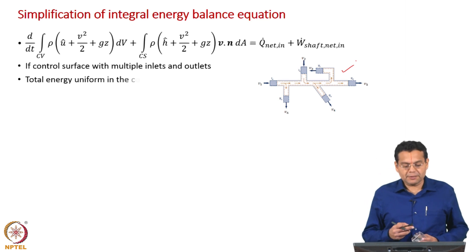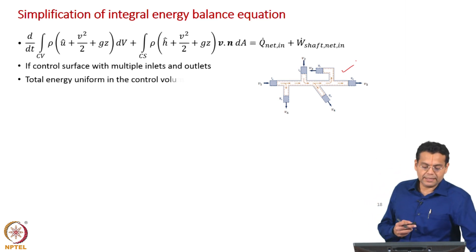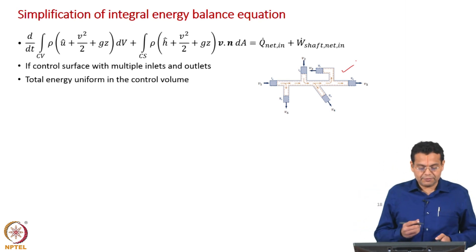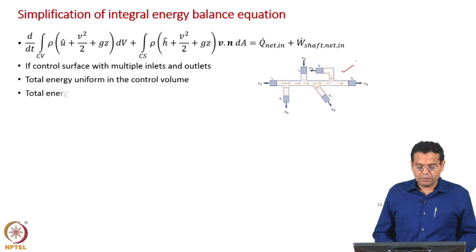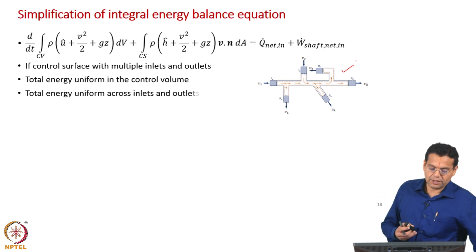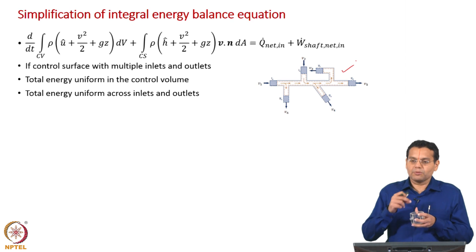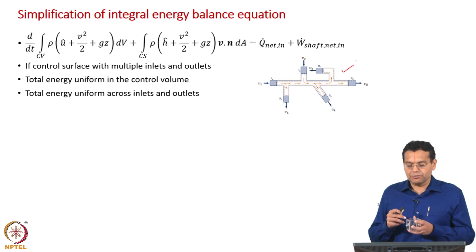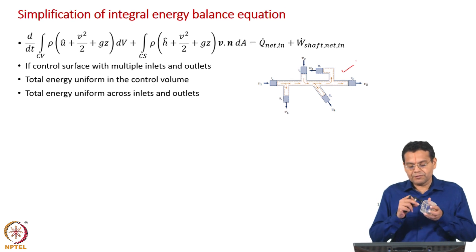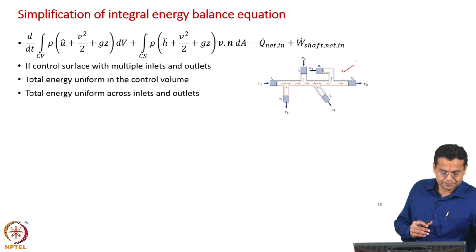We will make some assumptions: the total energy is uniform within the control volume, and the total energy is uniform across the inlets and outlets — meaning there is no variation across the cross section.